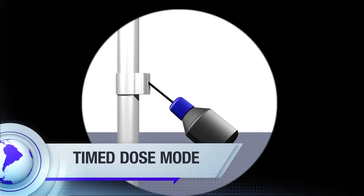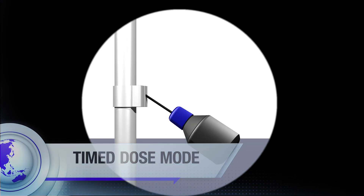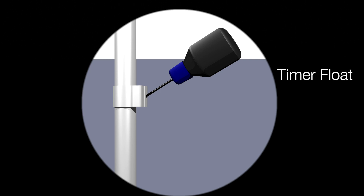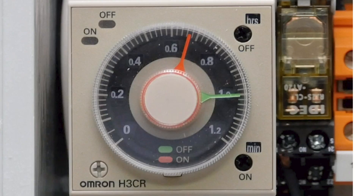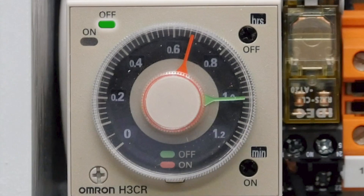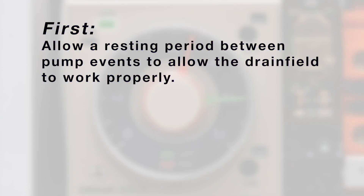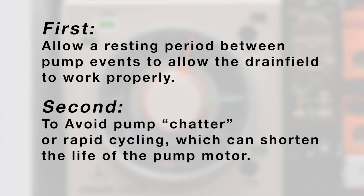In time dose mode, the pump on/off float is replaced with a timer on/off float. When the liquid level in the tank raises the timer float to the up position, it will energize the timer rather than the pump and begin the timer off cycle. This happens for two reasons: first, we want to allow a resting period between pump events to allow the drain field to work properly, and second, we want to avoid pump chatter or rapid cycling which can shorten the life of the pump motor.